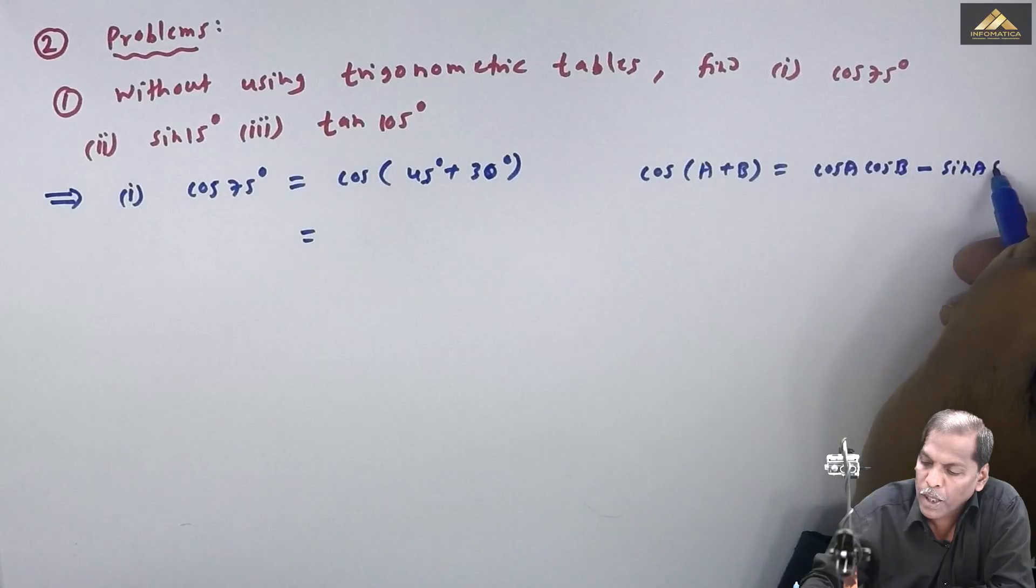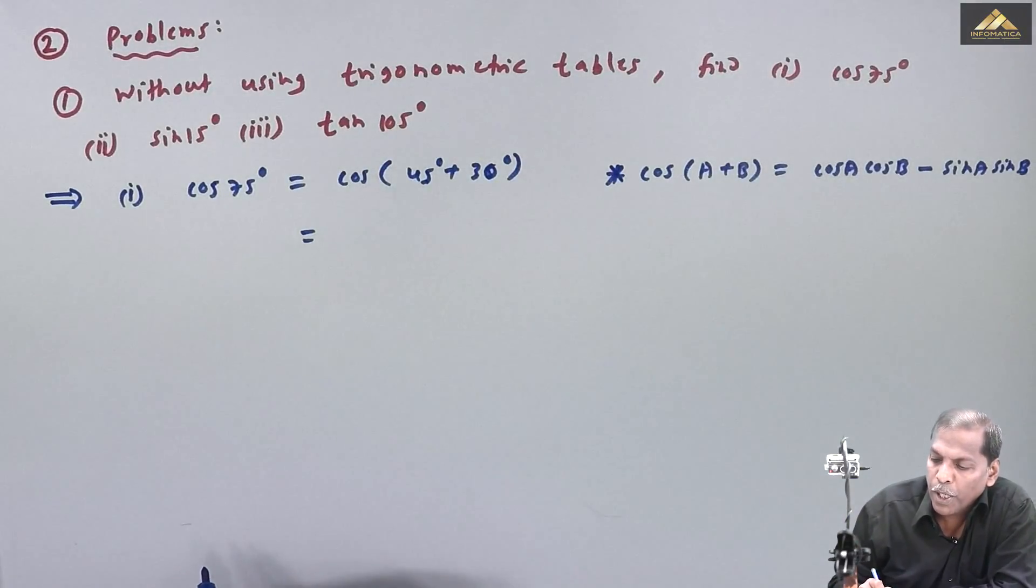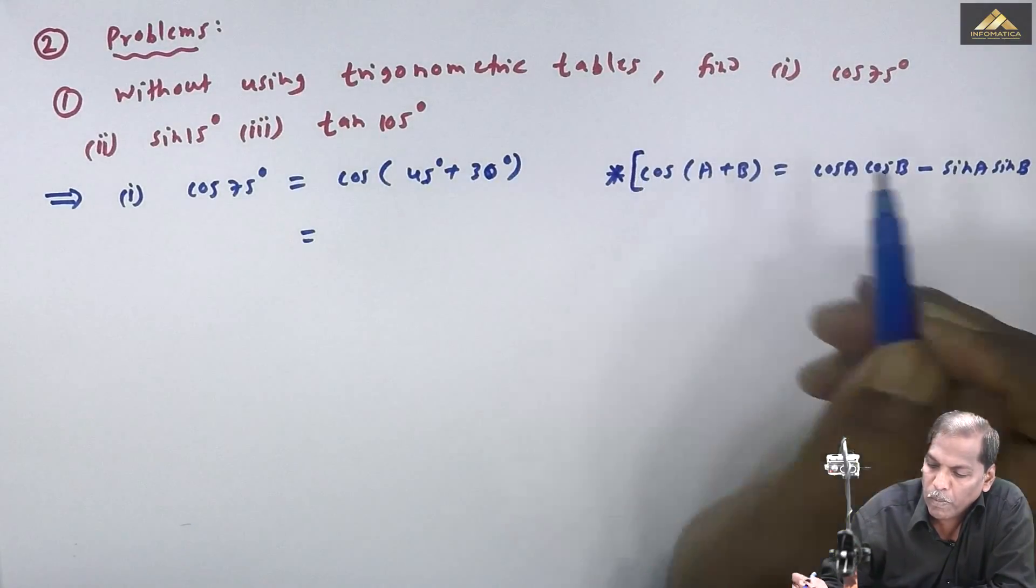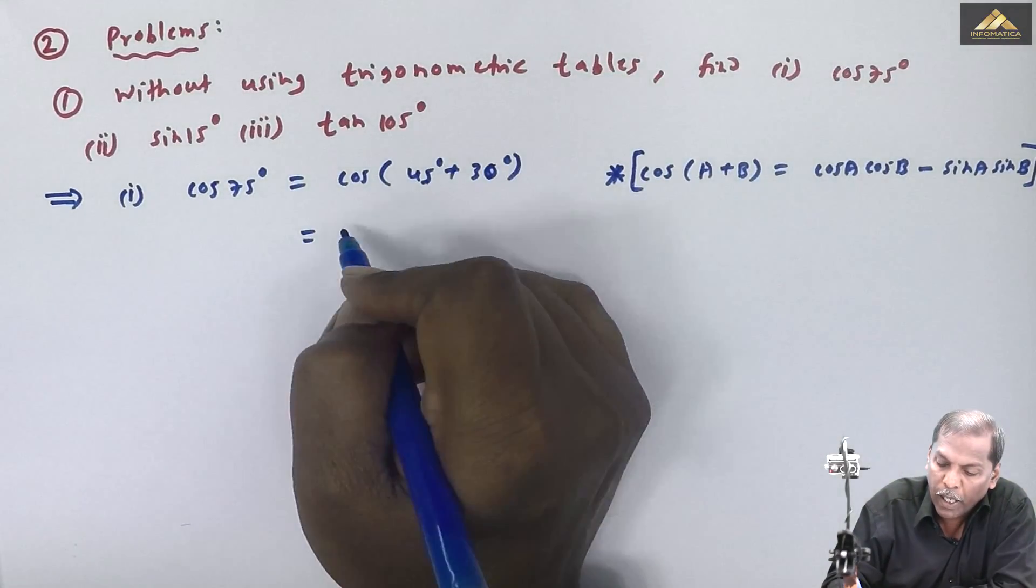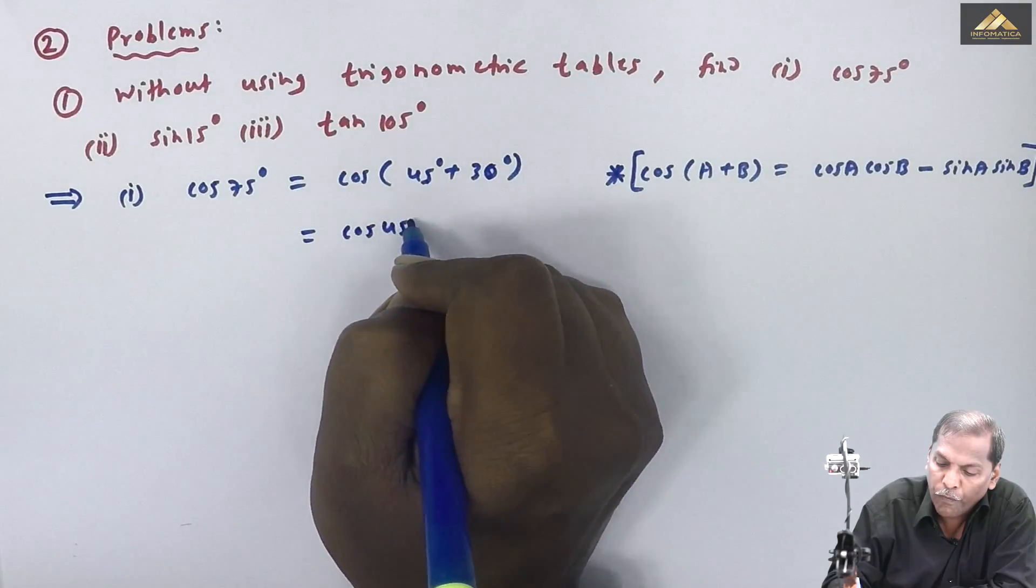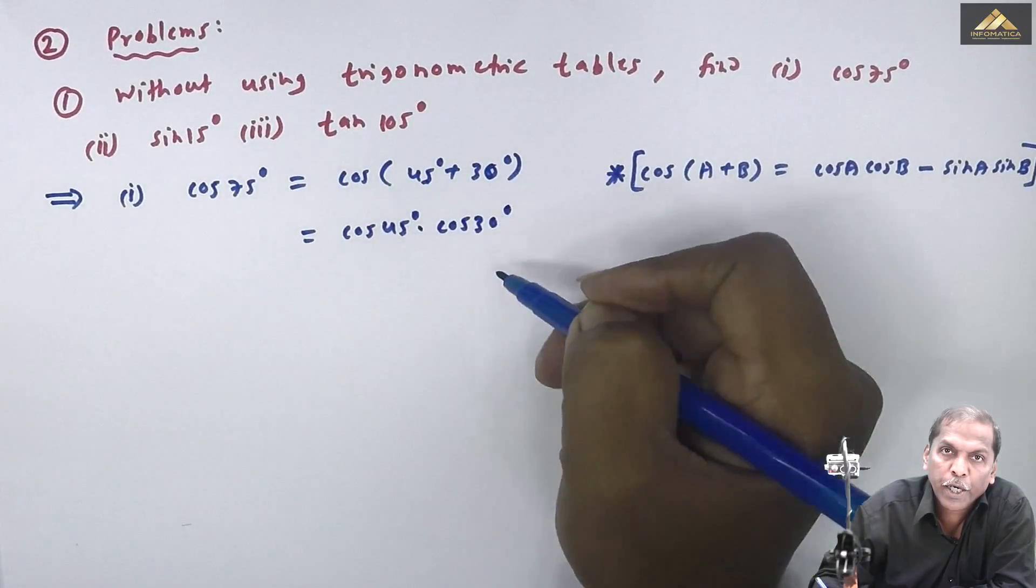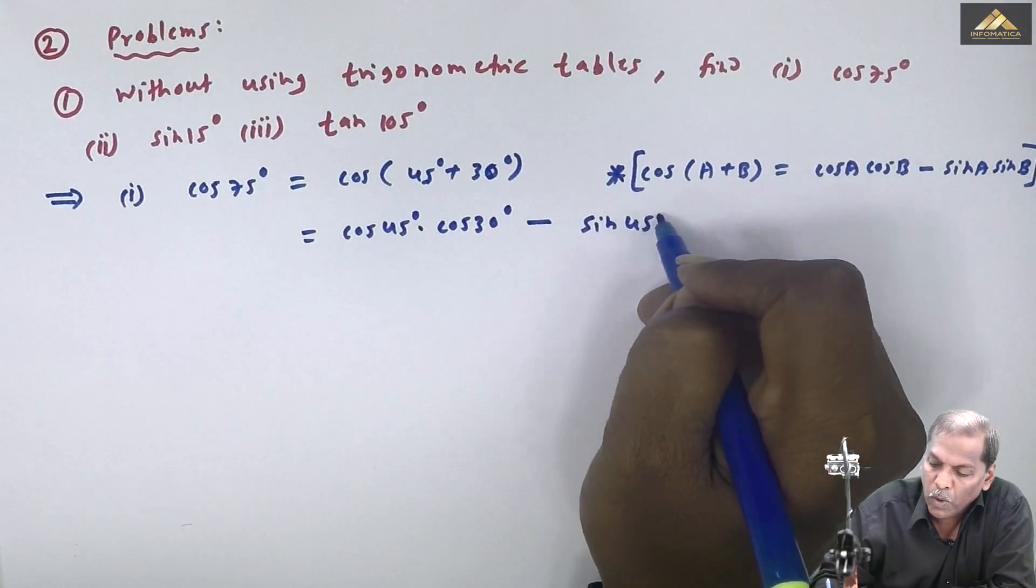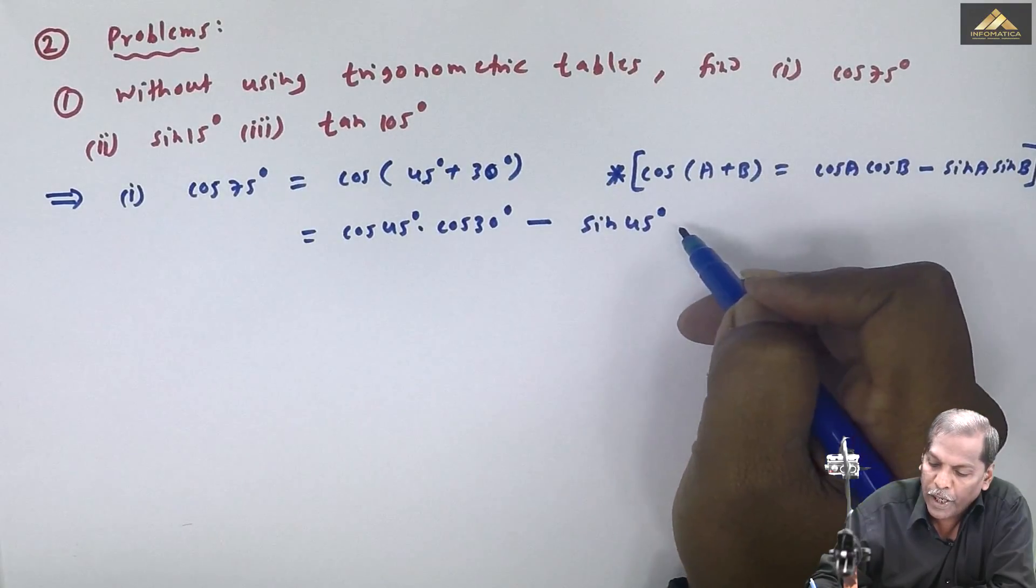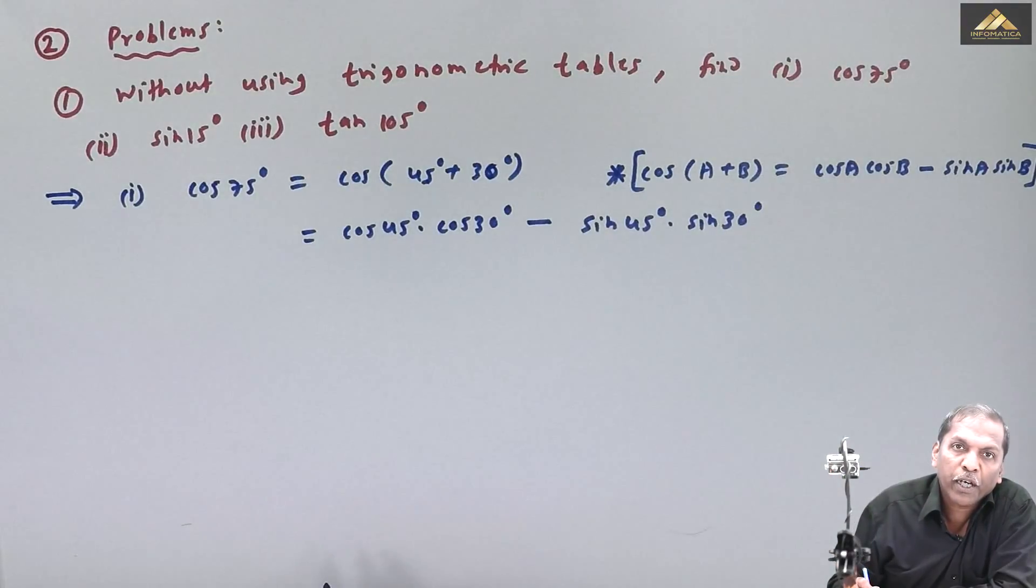So by using this formula, in the present case, we will get cos 45 degree into cos 30 degree minus sin 45 degree into sin 30 degree.